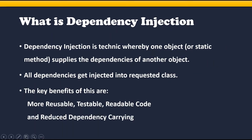To summarize: Dependency Injection is a technique where one object supplies the dependencies of another object. All the dependencies get injected into the requested class. The responsibilities of Dependency Injection include creating objects, knowing which classes require those objects, and providing them. The benefits include making code more maintainable, testable, readable, and it reduces dependency coupling.